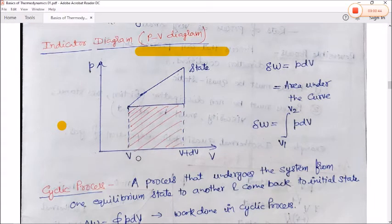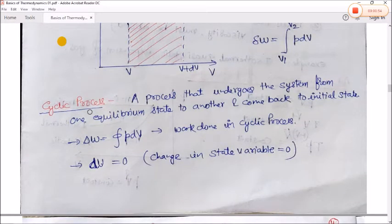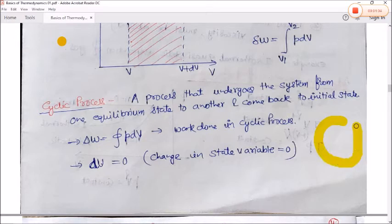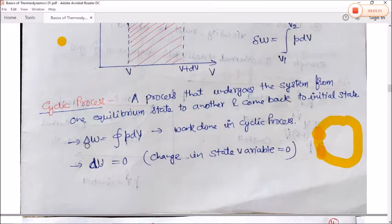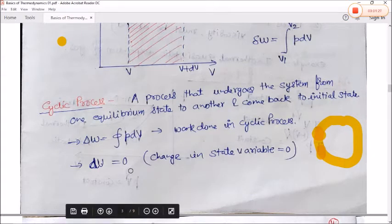If the volume is changing from V1 to V2, then the total work done can be calculated as W = ∫(V1 to V2) PdV. In a cyclic process, the system goes from one equilibrium state to another and returns to the initial state — both initial and final points are the same. For a cyclic process, work done = ∮ PdV, and the change in any state variable equals zero.